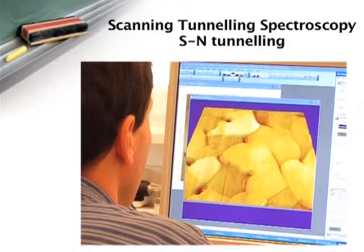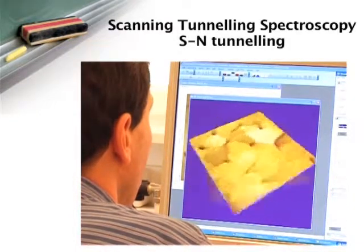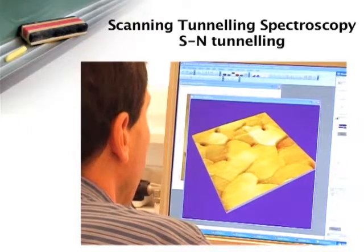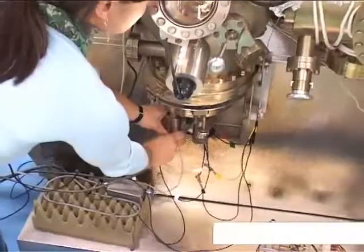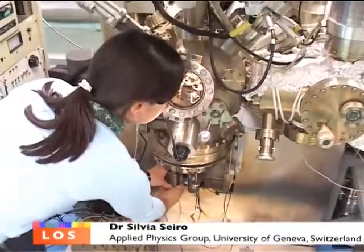You have an STM, a scanning tunneling microscope, in order to probe the surface topography with extreme resolution. You see now the STM which is placed in the center of the chamber in order to be positioned close to the sample.